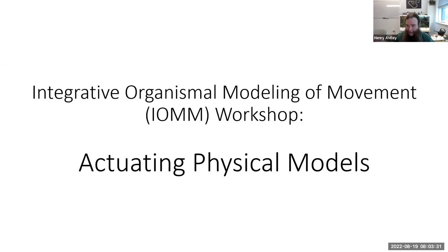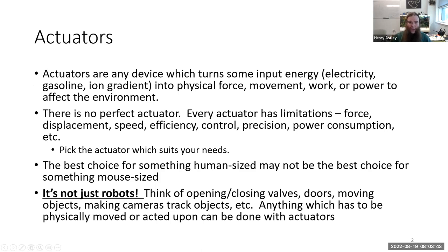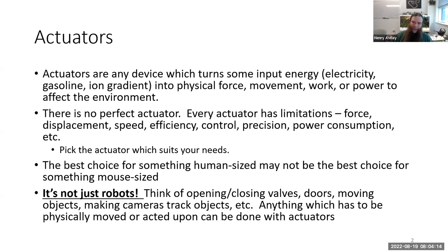Last time we talked about physical models and all the great ways you can use them in biology. Now let's talk about how to actually get them to move. The key to this is actuators — devices that take some input energy source, whether electricity, gasoline, or an ion gradient, and turn that into physical force, movement, work, or power in order to affect the environment. There are a lot of different actuators available and we're going to talk about several options.